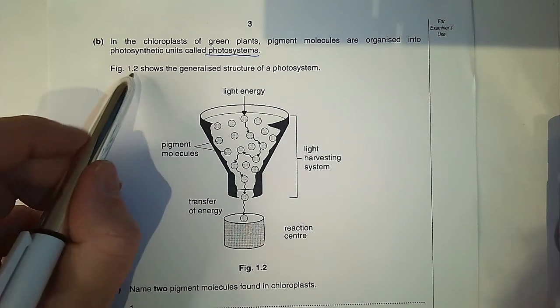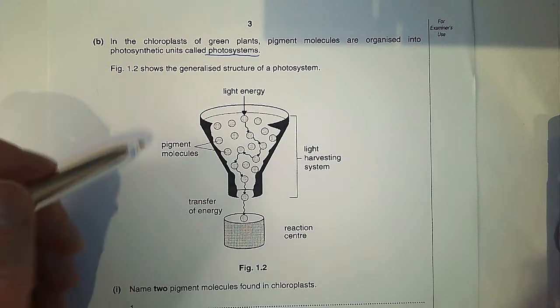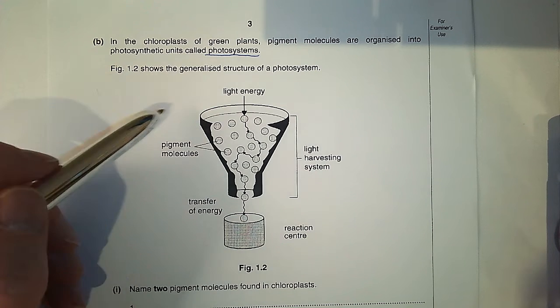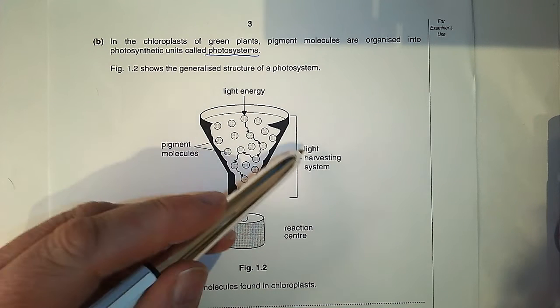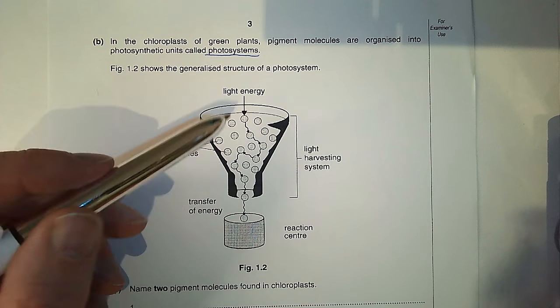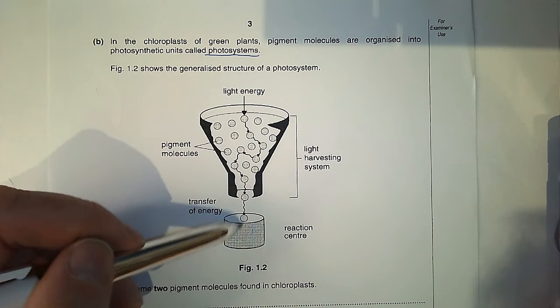Figure 1.2 shows the generalized structure of a photosystem. You can see we've got the photosystem funnel-shaped, we've got the pigment molecules inside the photosystem, and that's the light harvesting system. They're funneling down energy into the reaction center.